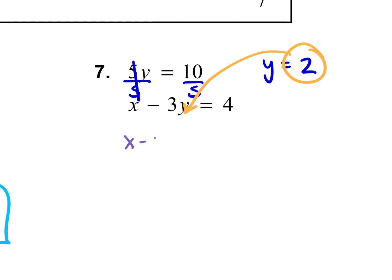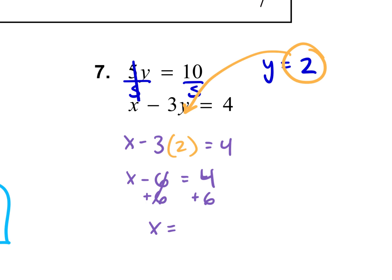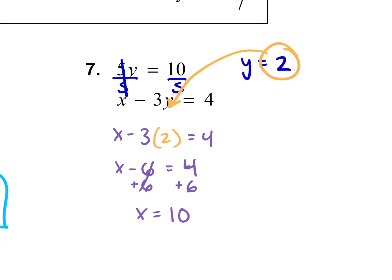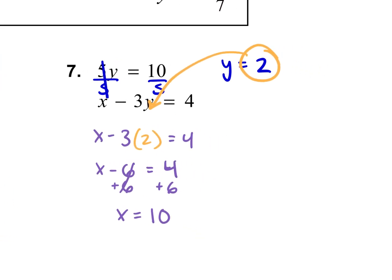So we have x minus 3 times 2 equals 4. What's negative 3 times 2? Negative 6. So x minus 6 equals 4. To move the 6 to the other side, we add 6, so x equals 10. Are we done? Yes — we found what x equals and what y equals. So how do we write our answer? (10, 2). Perfect.